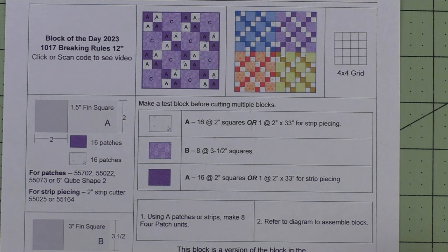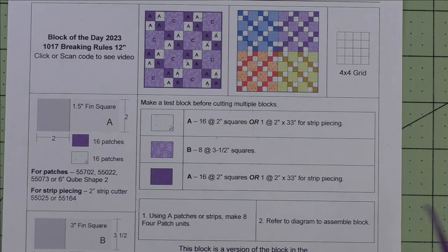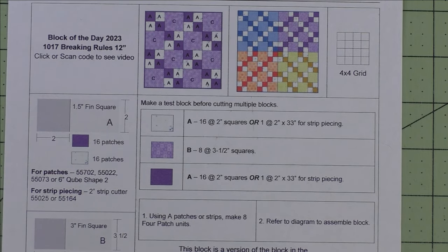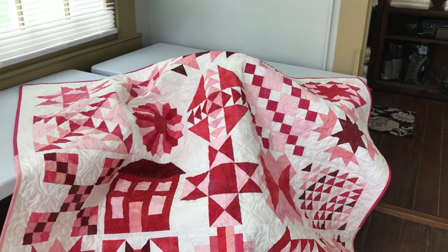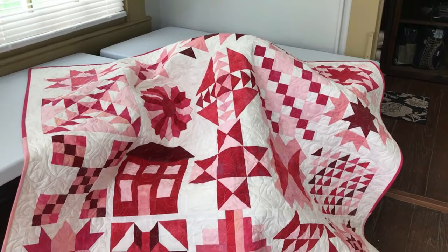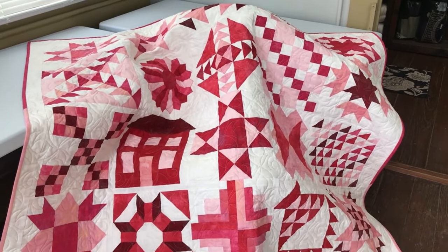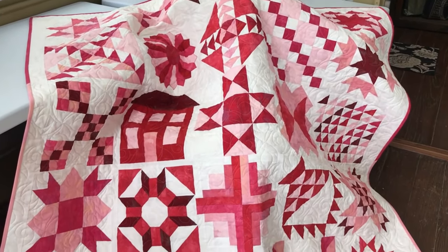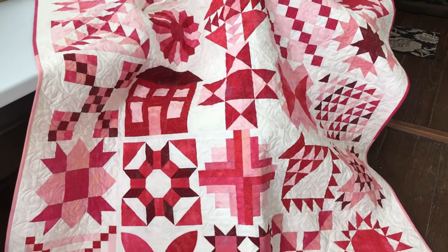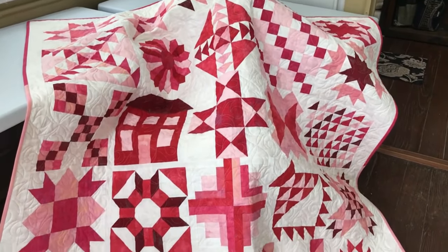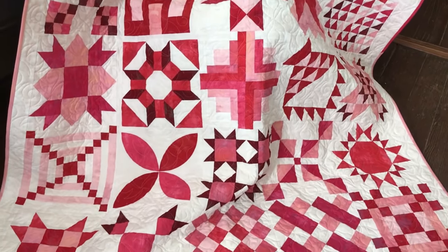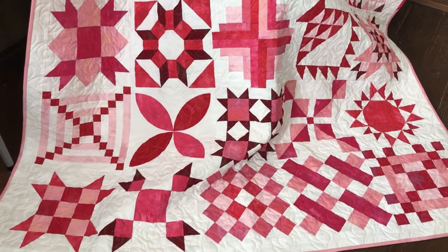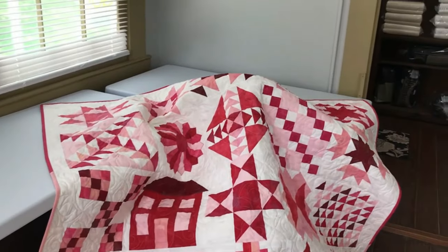So here's a short little video that describes the quilt. This is the Stitch Pink quilt designed by Moda Fabrics using fabrics from the Grunge collection, and there are 30 blocks, 30 12-inch blocks in the quilt.